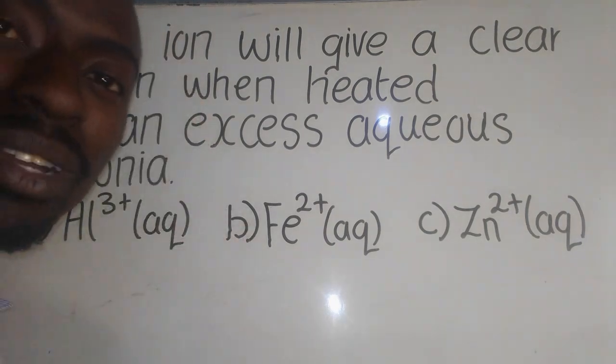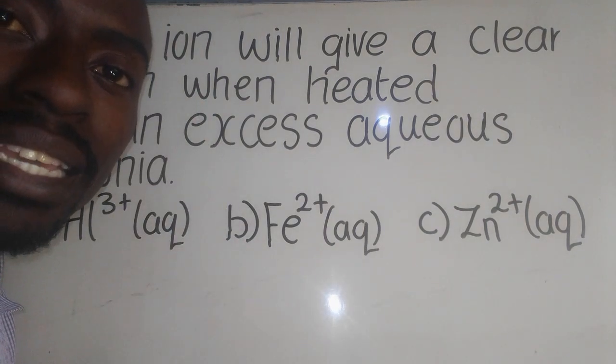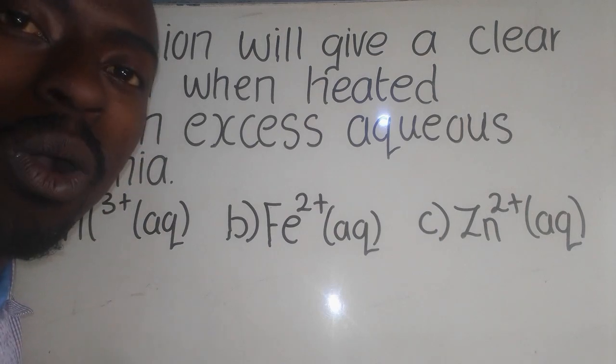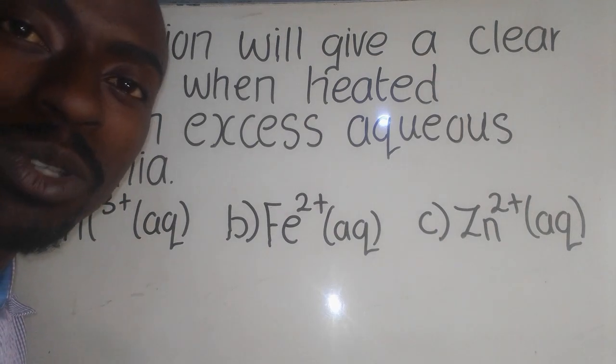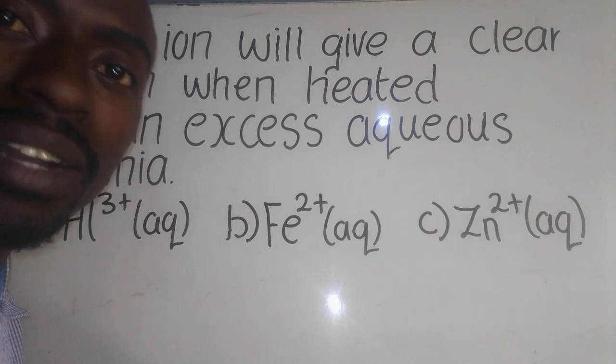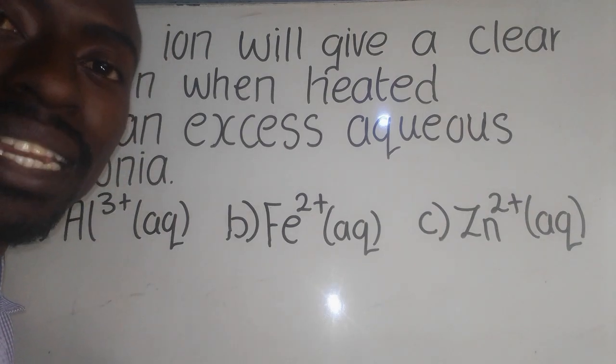When they say an ion, an ion is a charged particle meaning it may be an atom or a molecule. We have two types of ions: the cations which is the positive and the anion which is the negative.